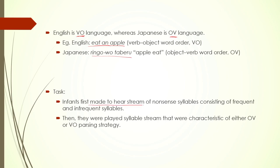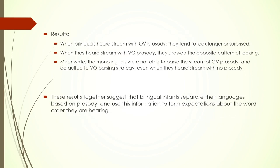The task was that Japanese-English bilinguals were first made to hear a stream of nonsense syllables consisting of frequent and infrequent syllables, and then they were played syllable streams characteristic of either OV or VO. What they found was that when bilinguals heard a stream of OV prosody they tended to look longer and appeared surprised, while when they heard VO prosody they showed the opposite pattern — meaning that at seven months of age, the bilingual infant brain is capable of distinguishing between these two patterns. Monolinguals were not able to parse the OV prosody stream and defaulted to a VO parsing strategy.